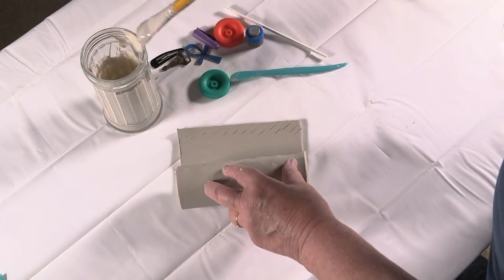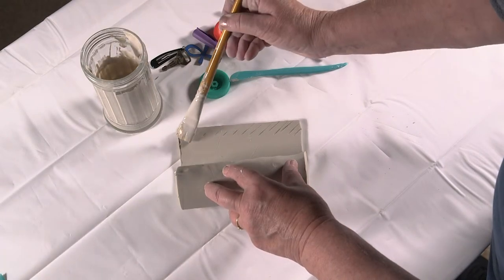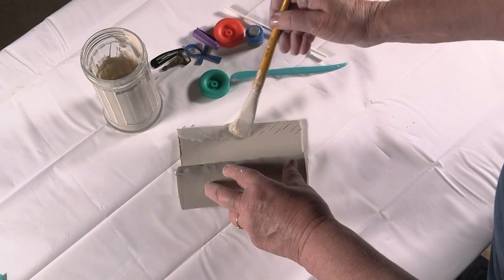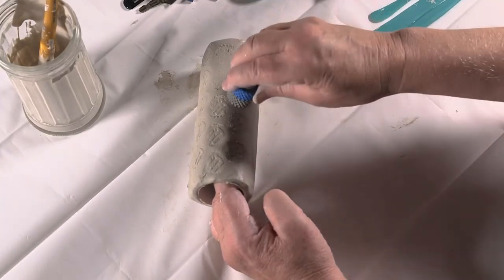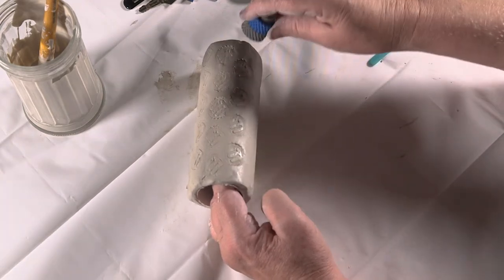Then join the overlap with slip, which is a thick paste created by mixing water and clay. Then press the objects into the clay to create the desired patterns.